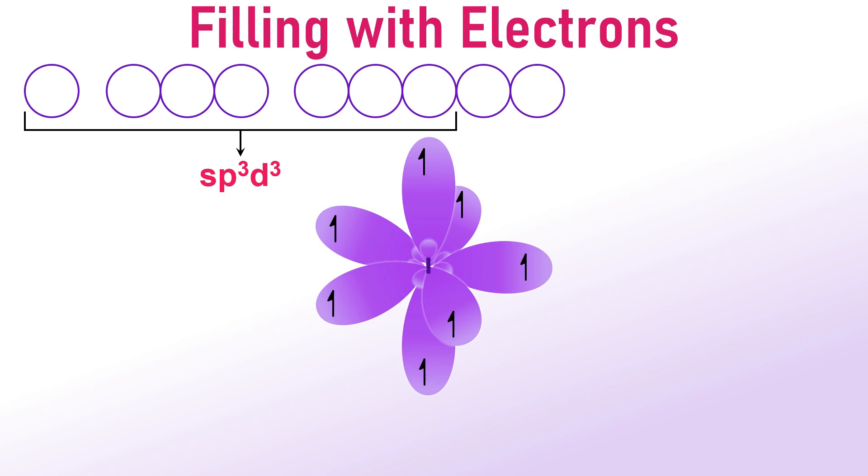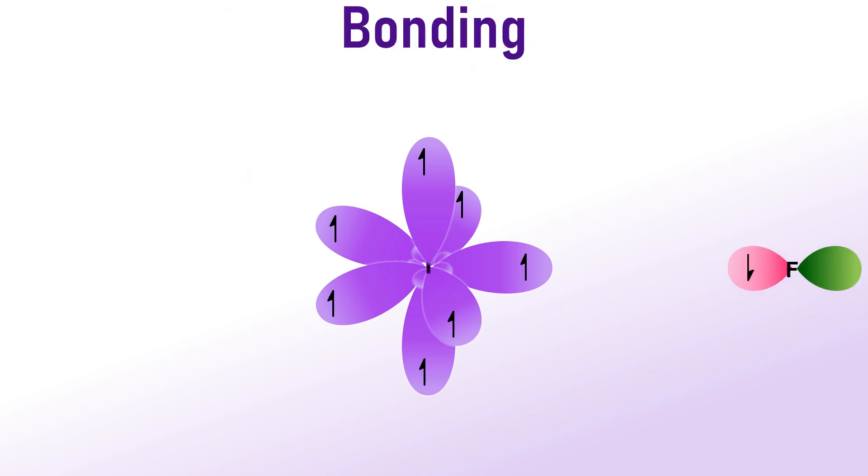These 7 sp3d3 hybrid orbitals are occupied by 7 electrons, resulting in the formation of 7 half-filled hybrid orbitals. Now, the half-filled hybrid orbitals make sigma sp3d3p bonds with 7 fluorine atoms.